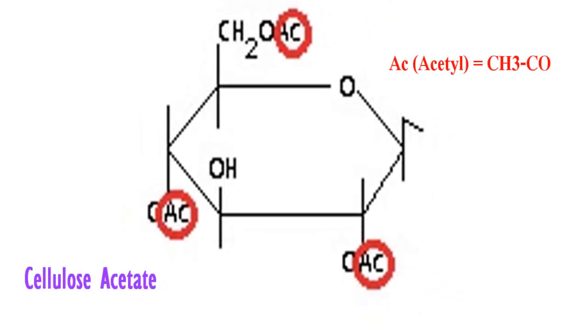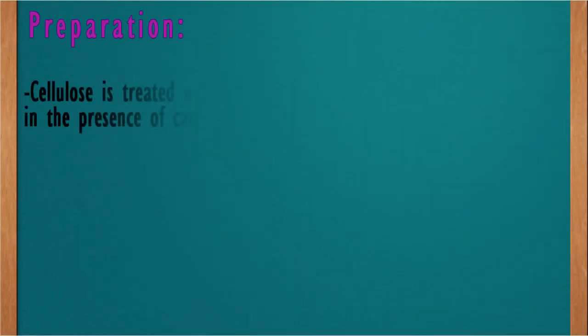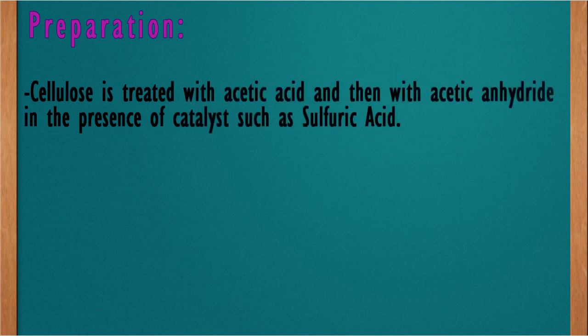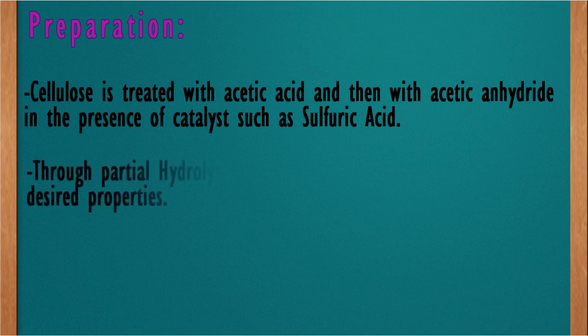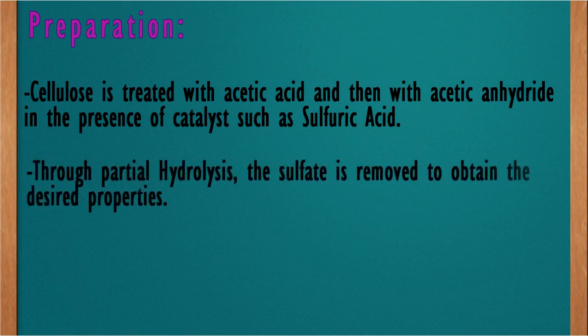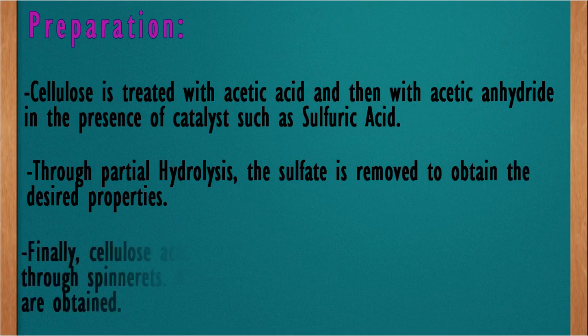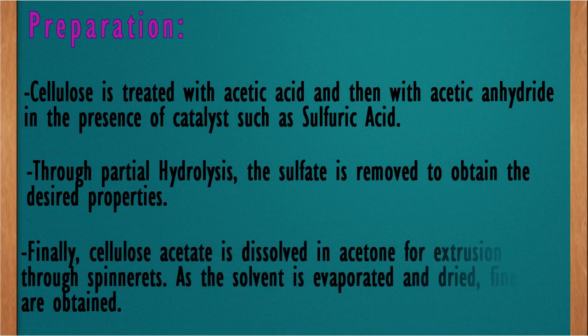AC is just the abbreviated form of acetyl groups. There are several ways of synthesizing this compound, but we'll just look at the most generic one. First, cellulose is treated with acetic acid and acetic anhydride in the presence of catalysts such as sulfuric acid. Through partial hydrolysis, the sulfate is removed to obtain the desired properties in the final product. Once the final product has been yielded, it is dissolved in acetone for extrusion through spinnerets. As the solvent is evaporated and dried, fine fibers of cellulose acetate can be obtained.